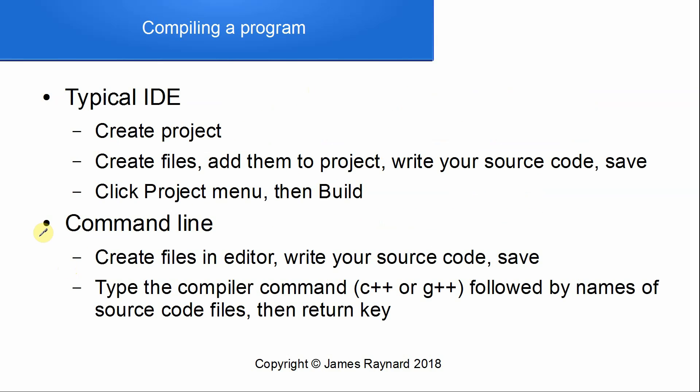Once you've got your compiler installed, how do you use it? If you're using a typical IDE, you create a project, create some files and add them to the project, then write the source code and save it. When creating the project, make sure it's a C++ project and ideally a console or command-line project, not a GUI project that adds strange things to your code. Then click the project menu, then Build, and hopefully you'll get a runnable executable without any errors.